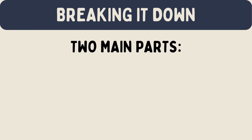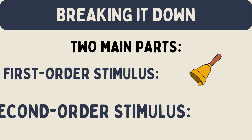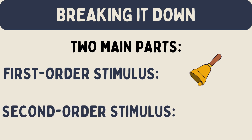Breaking it down: in higher order conditioning, there are two main parts. First order stimulus — this is the original thing you learn to connect with something else. In our example, it's the bell because it was paired with treats. Second order stimulus — this is the new thing you start to connect with the first thing. In our example, it's you getting ready to give Max a pat on the head.